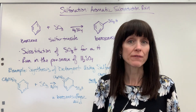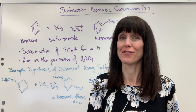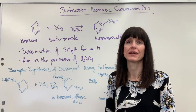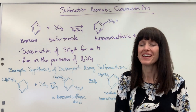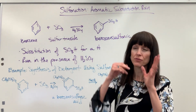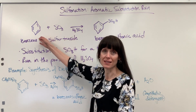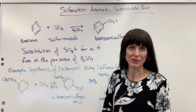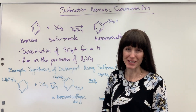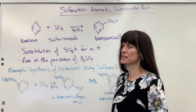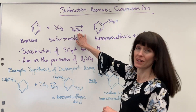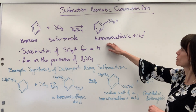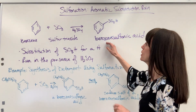This is a brief overview of sulfonation. Sulfonation is going to be an aromatic substitution reaction. So your general form for this is a benzene — there's your aromatic — and you're going to add a sulfur trioxide to it. Now this always has to be run in the presence of sulfuric acid, and it's going to produce what's called benzene sulfonic acid.